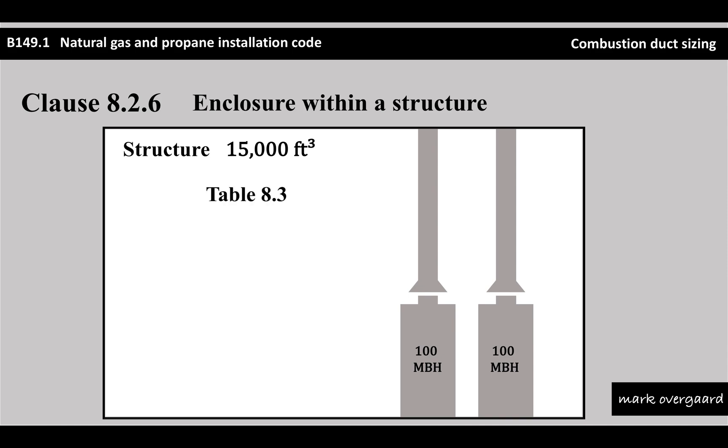If we were to size the opening in the wall that you might need to feed these appliances, we would go off Table 8.3. Table 8.3 is for low volume, a leaky structure with draft control. With 15,000 cubic feet and 200,000 BTUs, you don't need any extra openings. That's part of the whole clause - this structure has to be able to handle these two appliances with enough air coming in through the leaks and cracks.